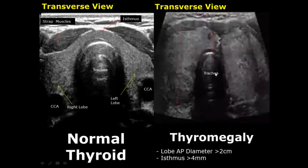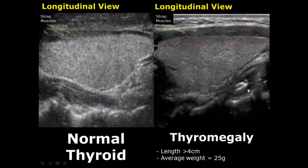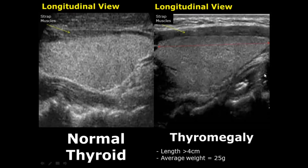We start off with thyromegaly, that is the enlargement of the thyroid gland. When the AP diameter is more than two centimeters and the isthmus is more than four millimeters, this is suggestive of thyromegaly. In the longitudinal view we can measure the length of the thyroid gland. The normal value is around four centimeters, and if it is more than four centimeters, it can be a signal of thyromegaly.